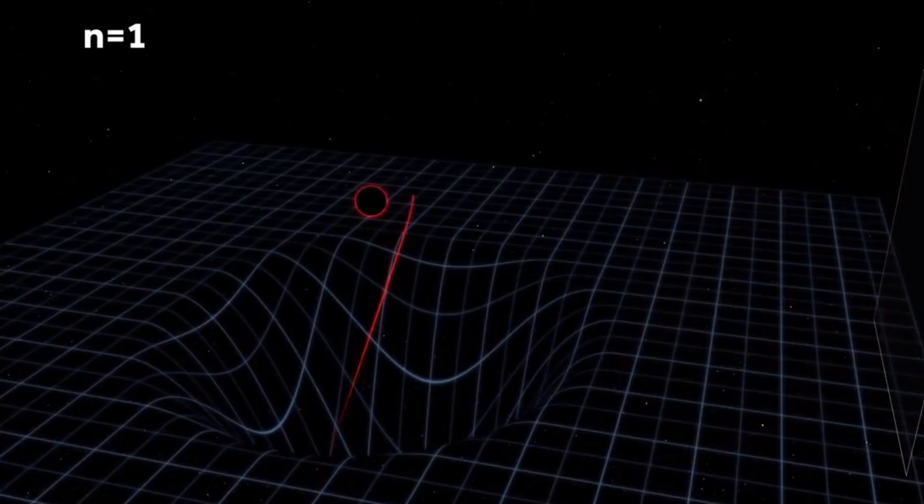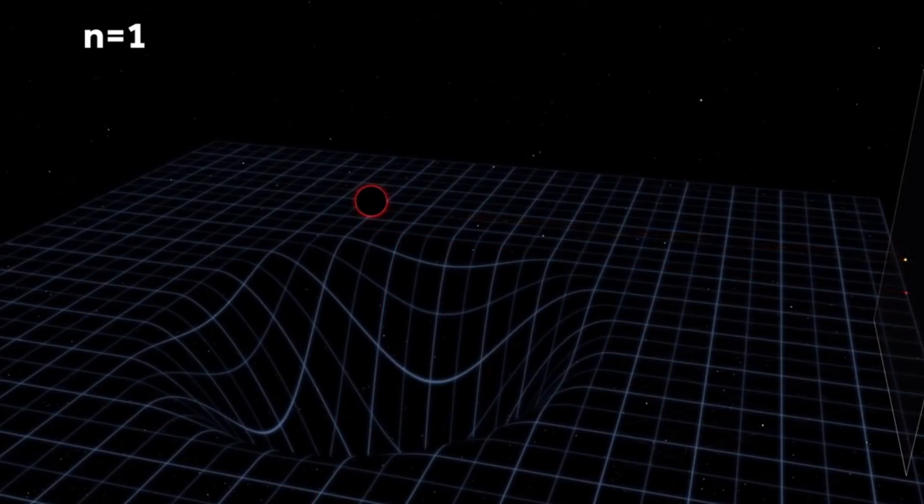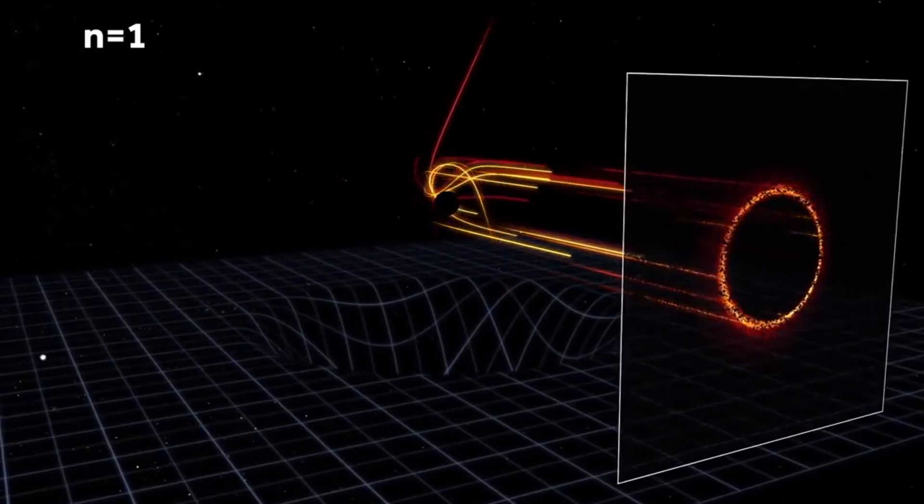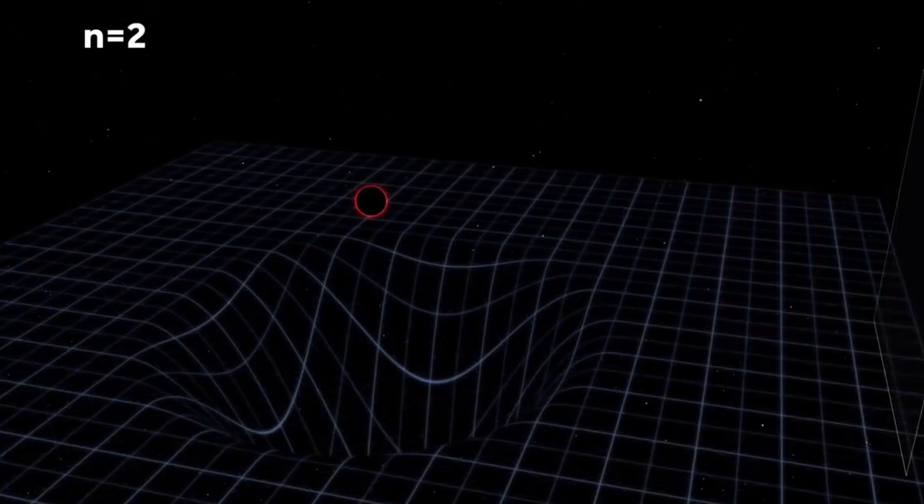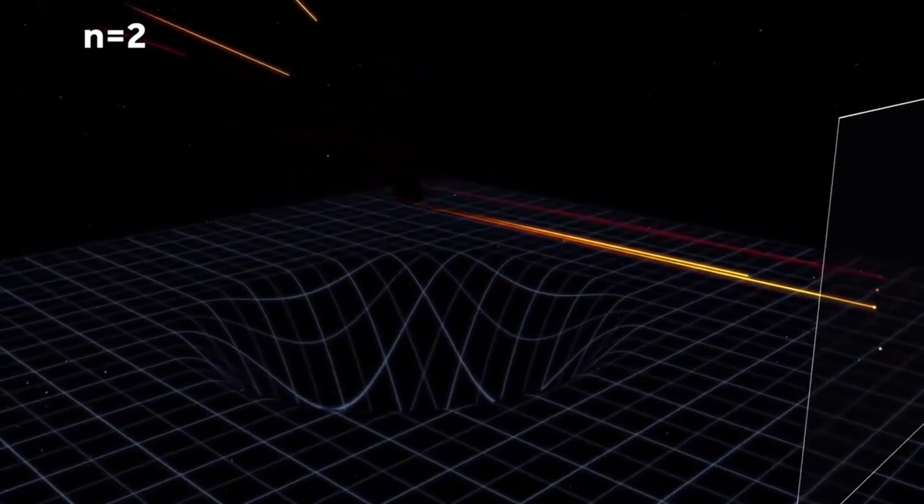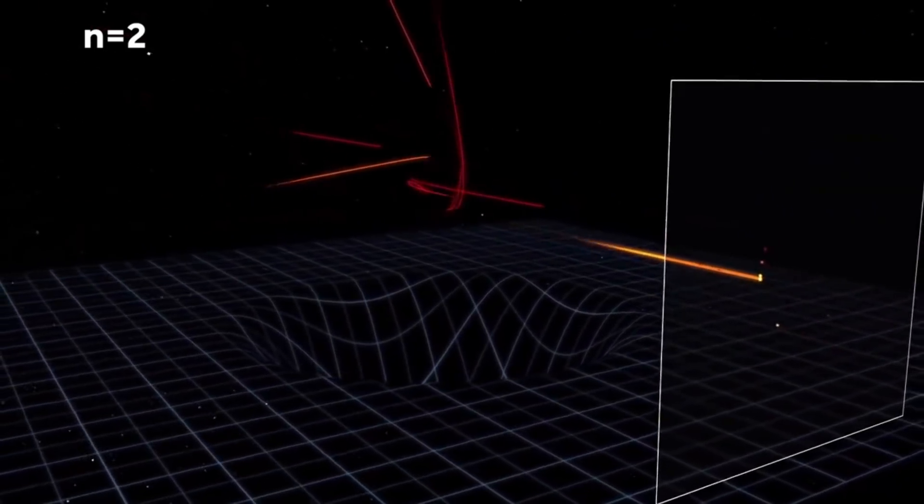But some light particles will actually sort of orbit around the black hole at least once, producing a slightly thinner ring, the ring that you see right here. And some of them might even have at least two orbits or even more, which will produce even a thinner ring with a lot more detail.